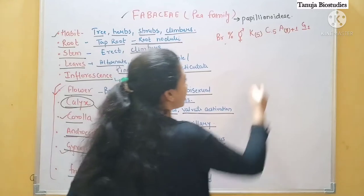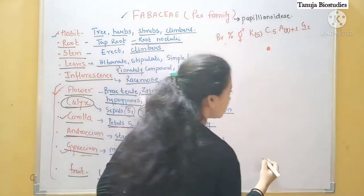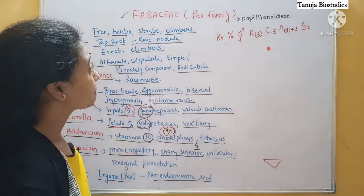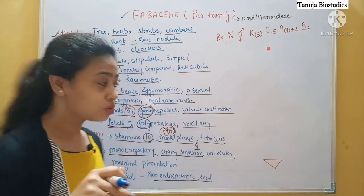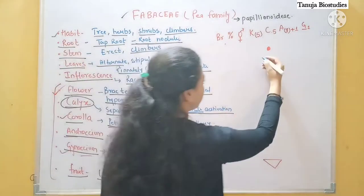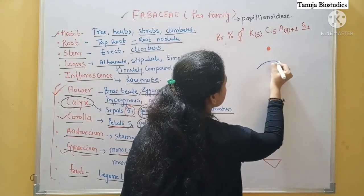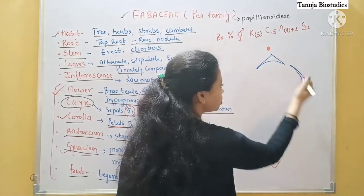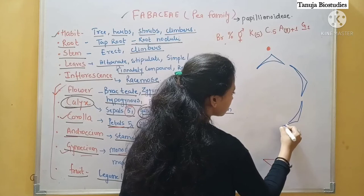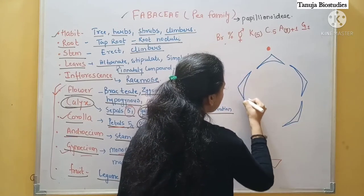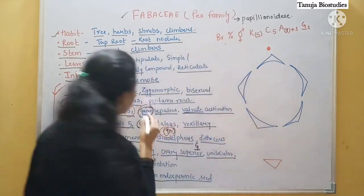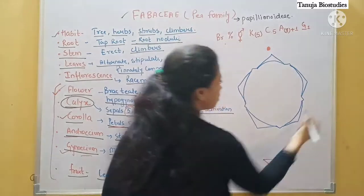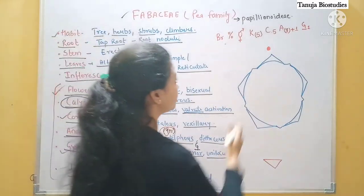Now let's talk about the diagram. First we will show the mother axis. Bracts are present, so we show the bracts. Now let's see the calyx: calyx has five fused sepals with valvate aestivation. So let's draw: one, two — it will not go up because it is valvate aestivation — three, four, and five. They are gamosepalous — fused — so we show them joined.